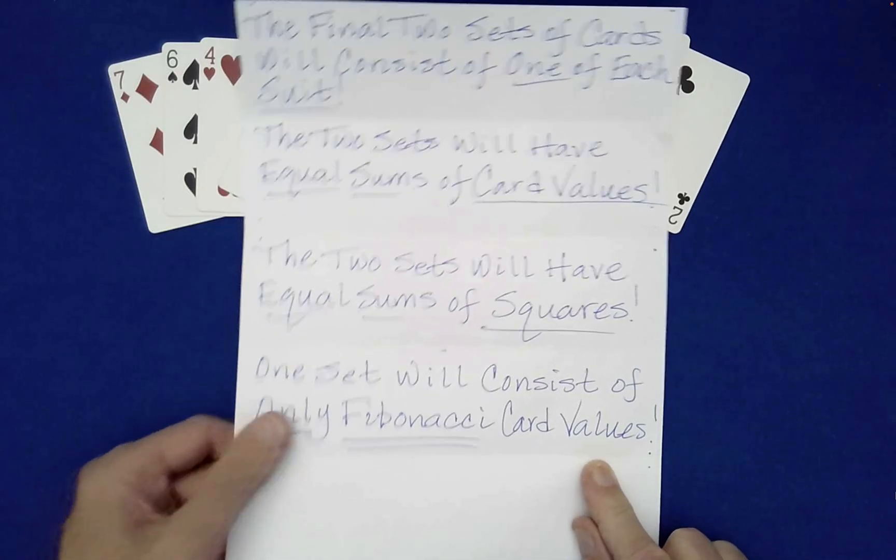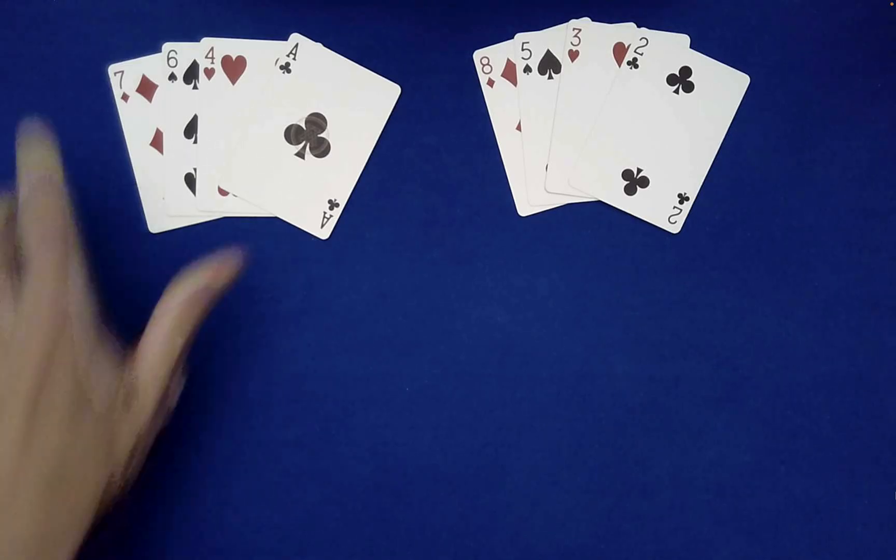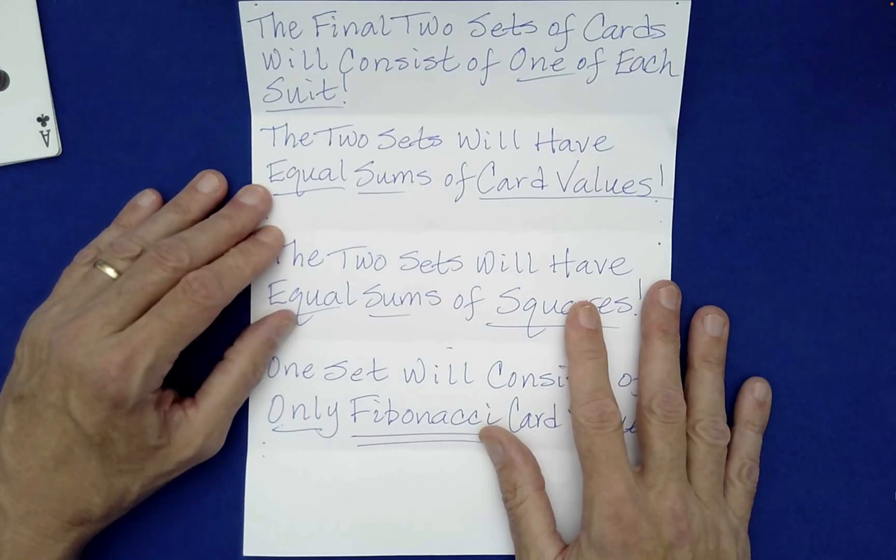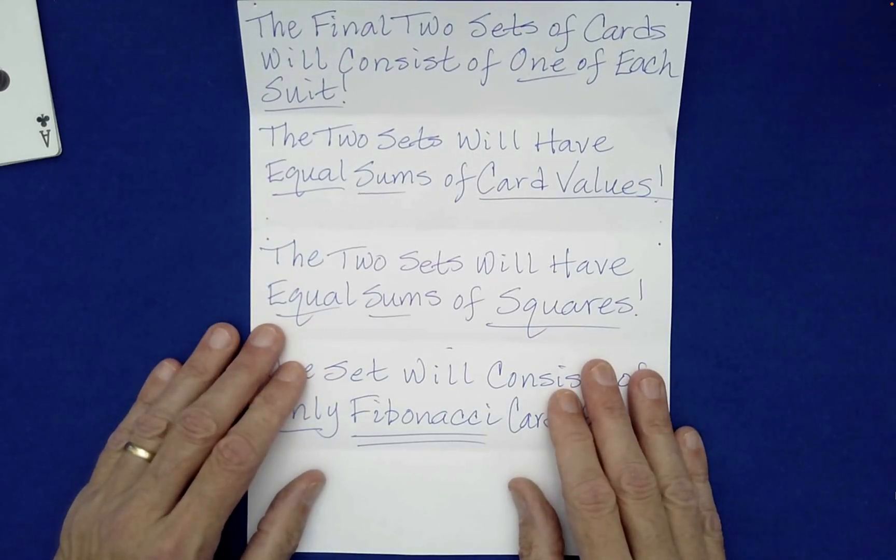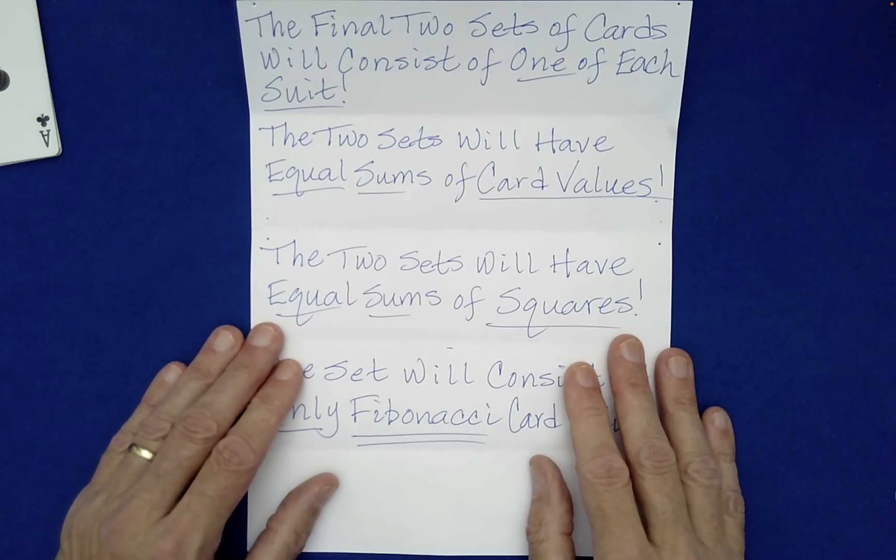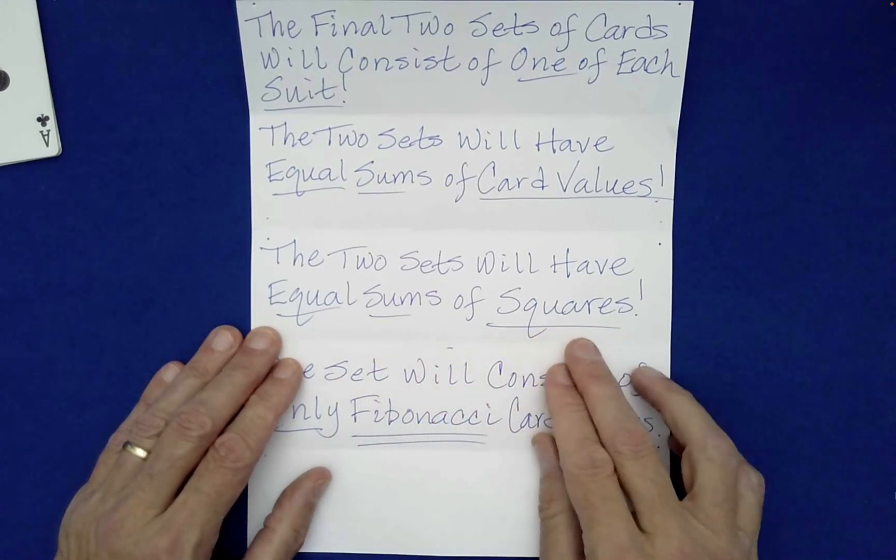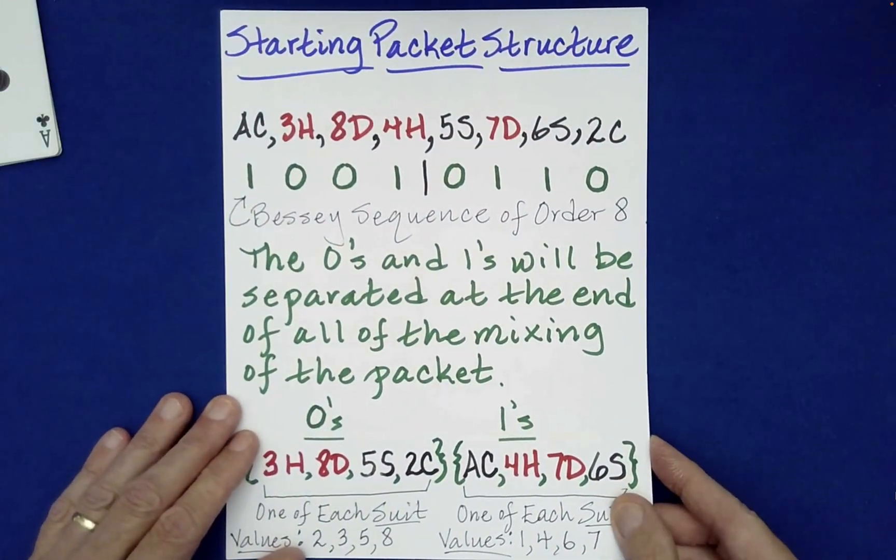Well, let's take a look at how this works. It uses something called Bessie sequences of order eight. In fact, we're just using a single Bessie sequence, and then I want to generalize what we just did, because what we did here is we found two sets of numbers, four numbers in each set. When added, they give you the same sum within those two sets. We also found that those same values, when squared and added, gave you the same answer also. Well, depending on how many cards you're willing to work with, we can find two sets of values where they have equal sums of cubes or even powers of four or five or six.